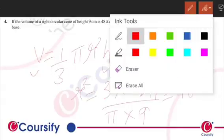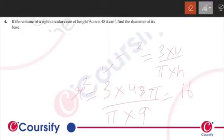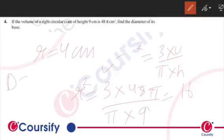By taking the square root of 16, we get the value of r as 4 centimeters. The diameter is twice the radius, that is 8 centimeters. So this is our final answer.